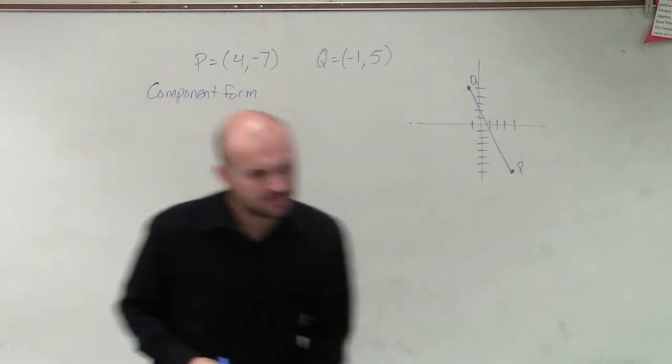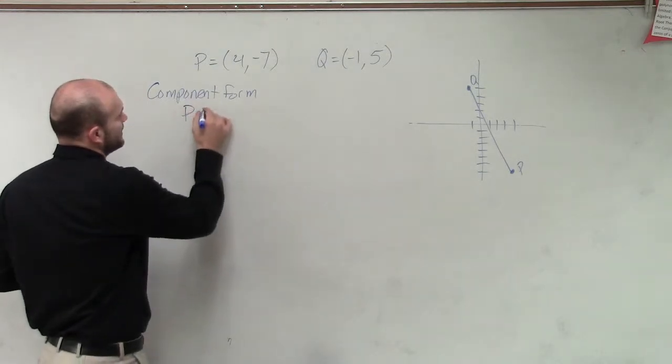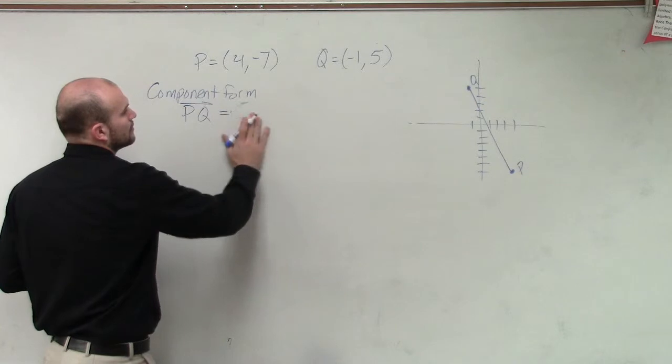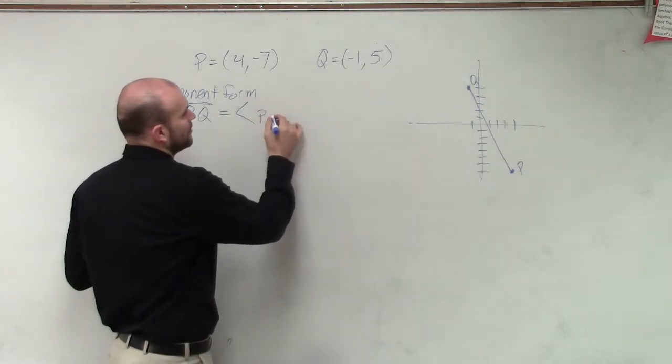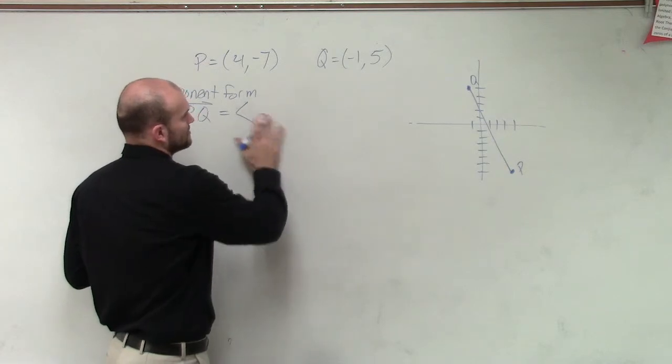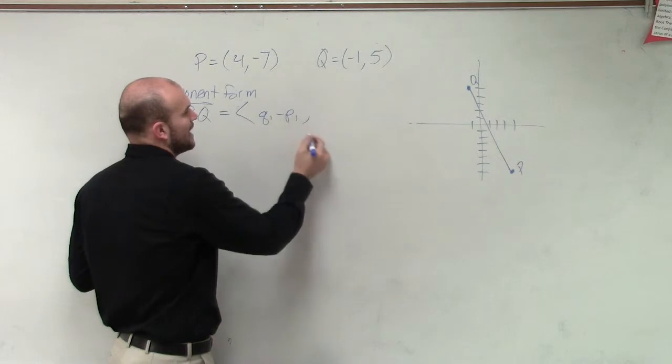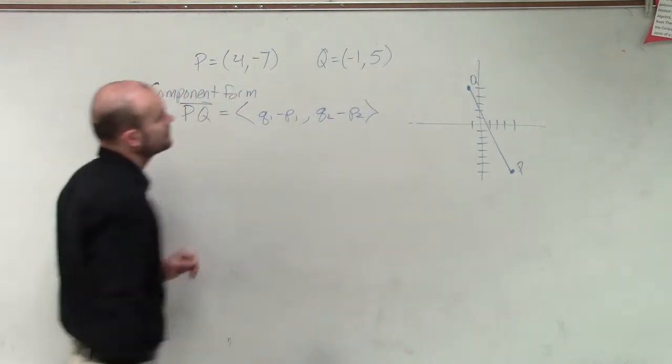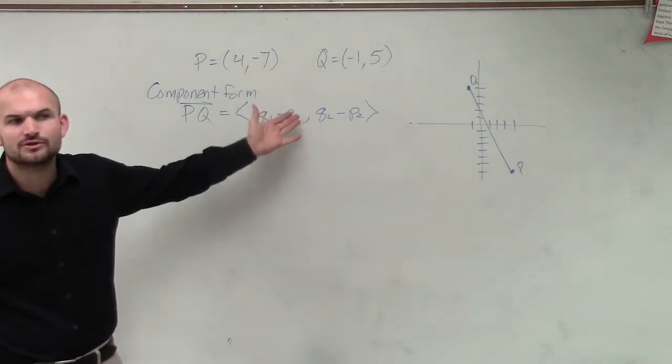When dealing with our component form of PQ, we're now going to have Q1 minus P1 comma Q2 minus P2. So now we simply need to say, what is our P1 and Q1, P2 and Q2?